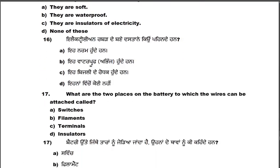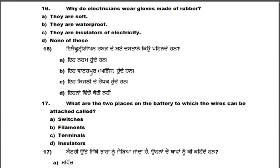Why do electricians wear gloves made of rubber? Because rubber is an insulator of electricity. When doing electrical work, rubber gloves prevent the electric current from passing through. They are also soft and waterproof. The answer is: they are insulators of electricity.